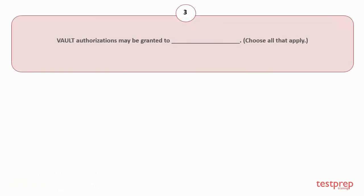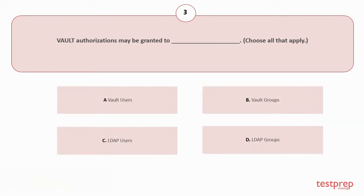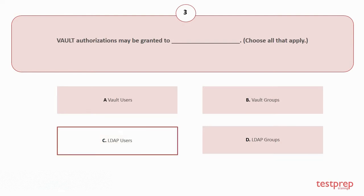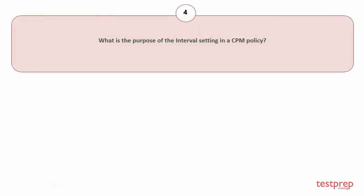Question number 3: Vault authorizations may be granted to — Choose all that apply. Your options are: A. Vault users, B. Vault groups, C. Sealed app users, D. Dealed app groups. The correct answer is option C.